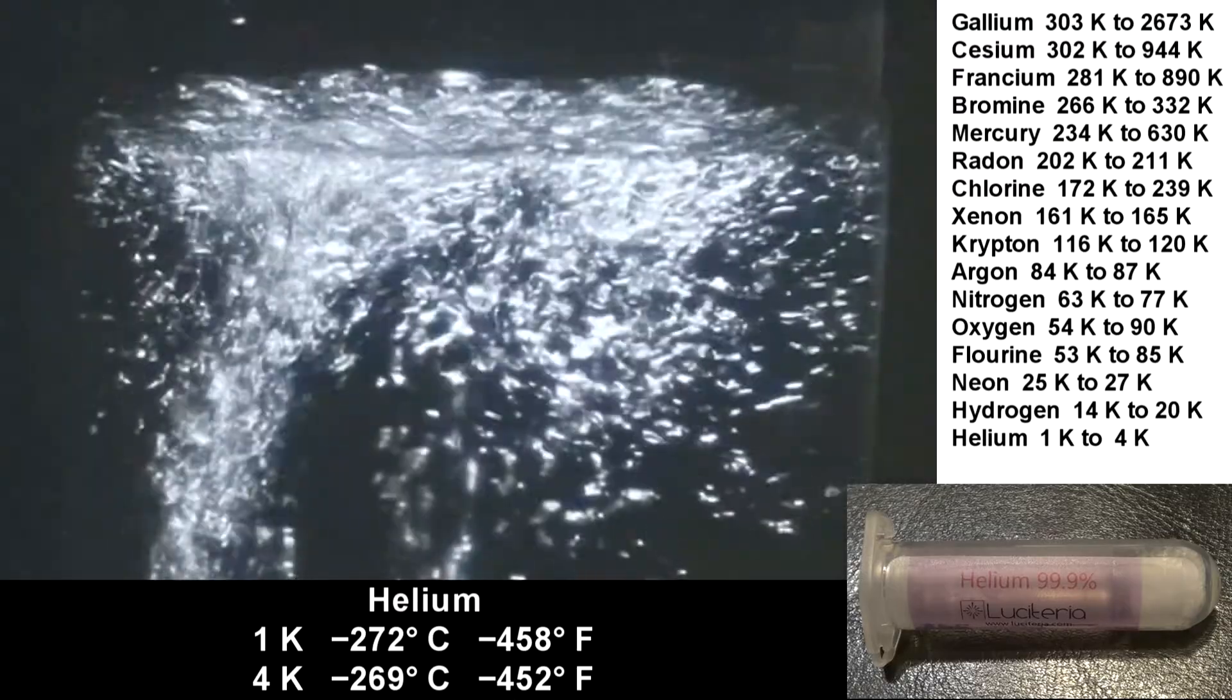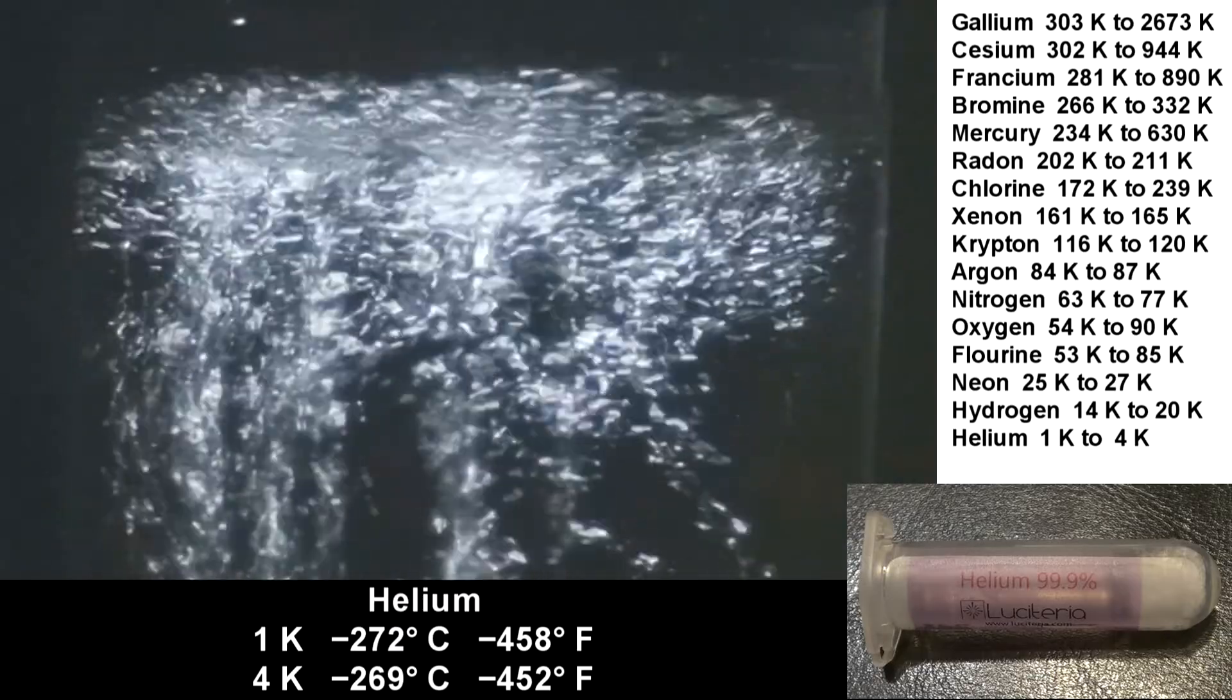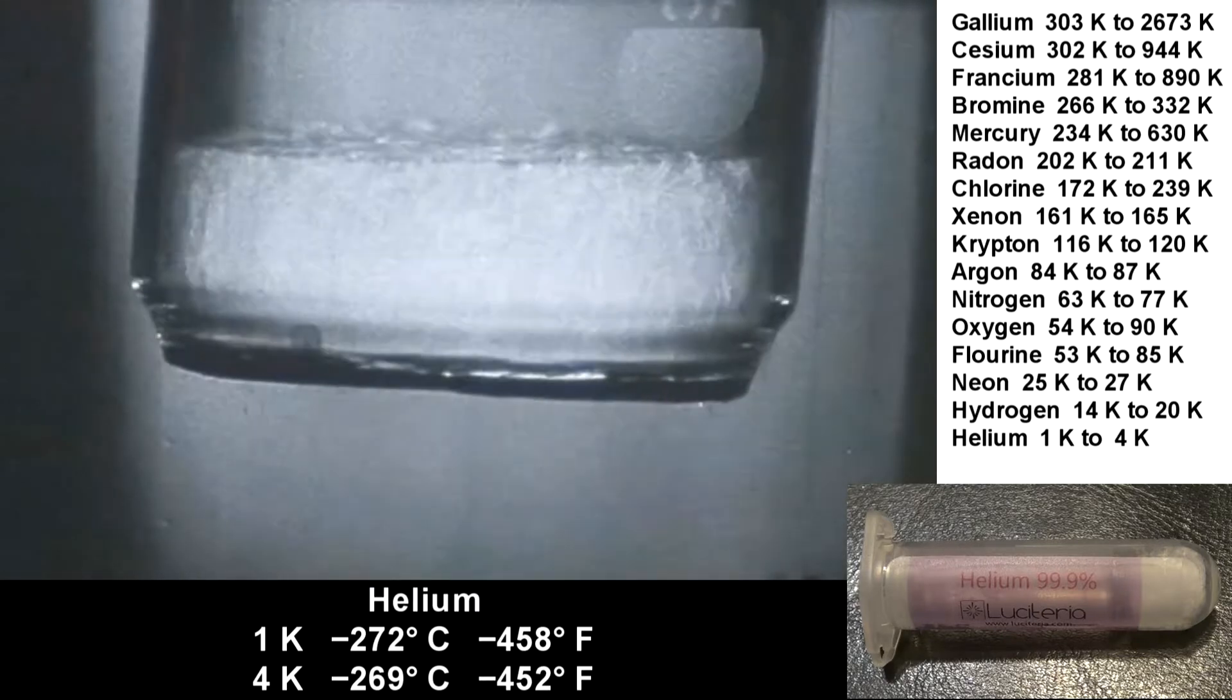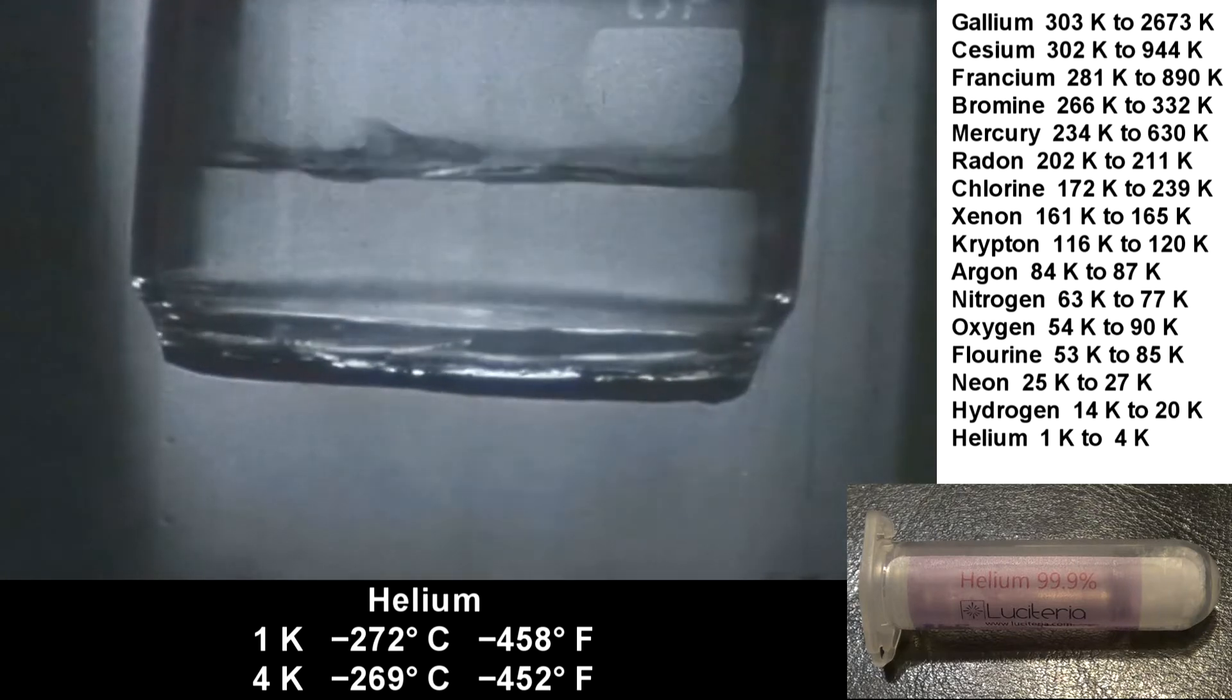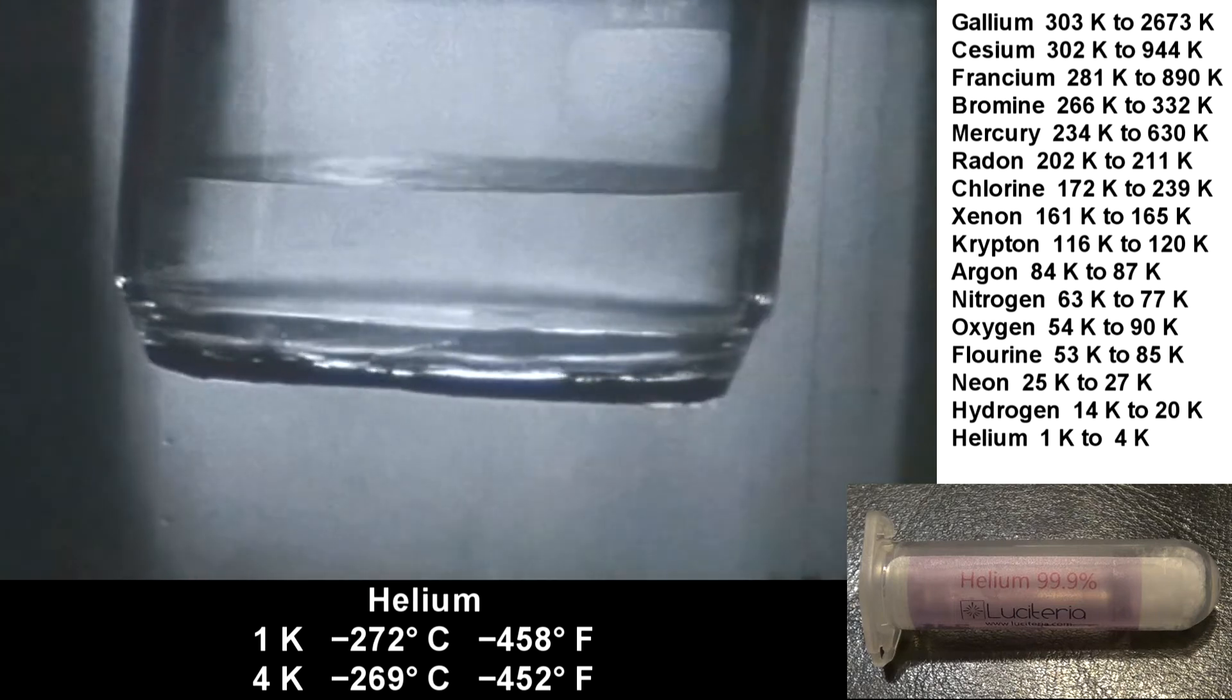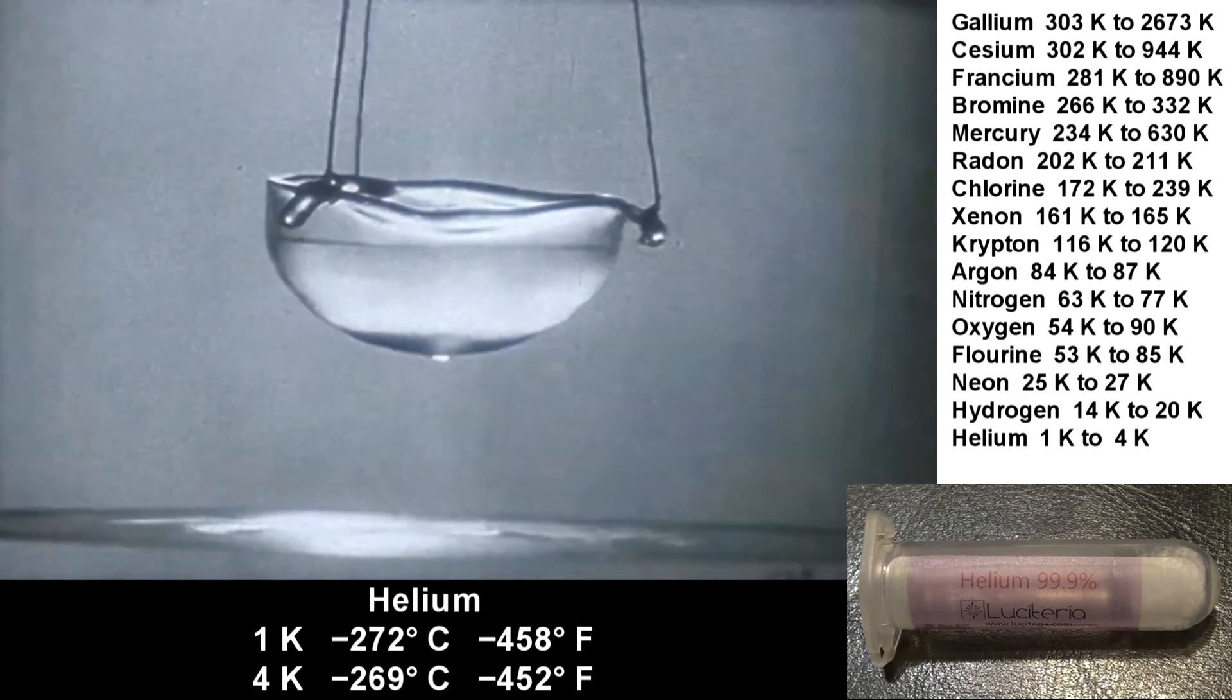Actually, helium gets so cold that it has some really strange properties when it gets close to absolute zero. As liquid helium approaches 2 Kelvin, it starts to boil like crazy, and then all of a sudden, BOOM! It becomes completely still. At that point, it becomes a superfluid and is able to flow right through solids. If you stir it, it'll keep swirling forever. It can defy gravity and flow up and out of containers. Really cool stuff!